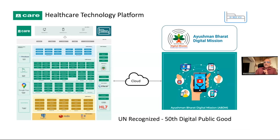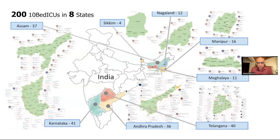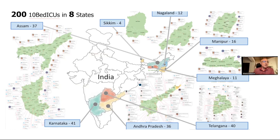The impact we are having is quite large. Within a year and a half, 200 10-bed ICUs — each costing about 50 lakhs just for equipment, plus software, LAN networking, and cameras for tele-ICU — have been deployed in eight states: Karnataka, Telangana, and Andhra Pradesh in the south, and Sikkim, Nagaland, Manipur, Meghalaya, and Assam in the northeast. Pretty much all of them are live.